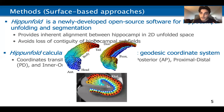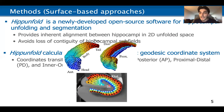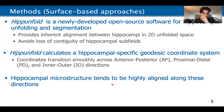Here's a 3D model of the hippocampus. The jet coloring underneath represents those geodesic coordinates, and you can see they transition anterior-posterior, proximal-distal, and across laminae or inner and outer. Hippocampal microstructure tends to be highly aligned along these directions.